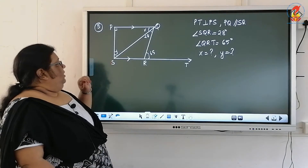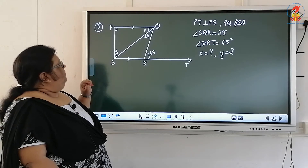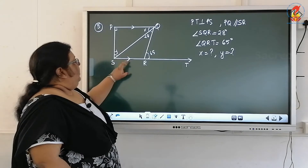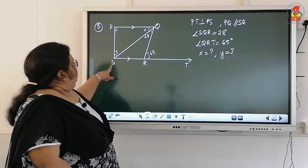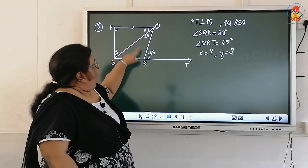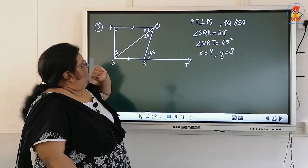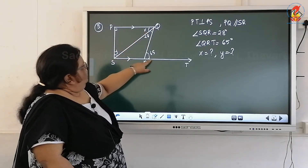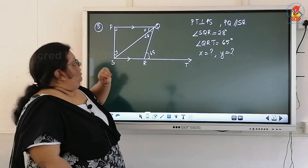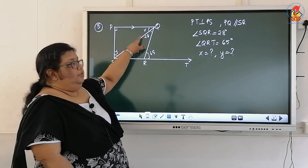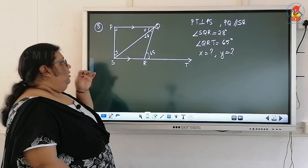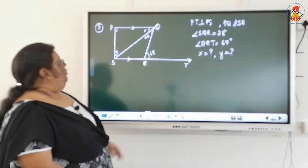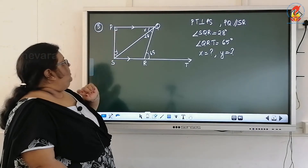Next question. There is a figure given. PT is perpendicular to PS. PQ is parallel to SR. Angle SQR is 28 degrees and angle QRT is 65 degrees. You need to find the values of X and Y. Angle P is 90 degrees and the two lines PQ and SR are parallel.